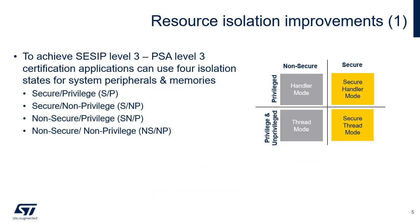When TrustZone is enabled, the secure world can be used to protect critical code against intentional or unintentional tampering from the more exposed code running in the non-secure world. Whether TrustZone is enabled or not, the Cortex Privileged Mode can be used to protect critical code or data against intentional or unintentional tampering from unprivileged code. These resource isolation features were instrumental in obtaining the CCIP Level 3 and PSA Level 3 certification. CCIP stands for Security Evaluation Standard for IoT Platforms and PSA stands for Platform Security Architecture.